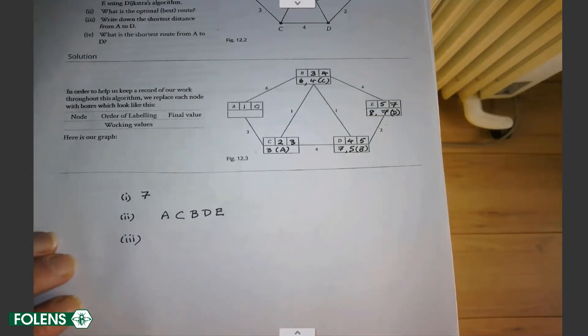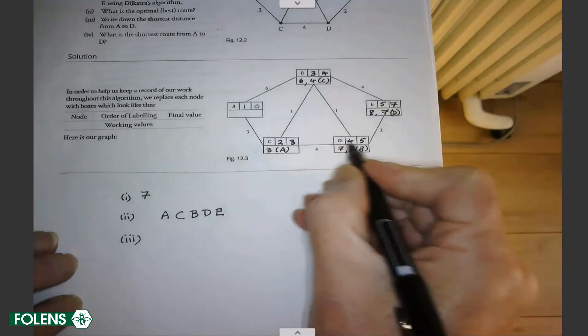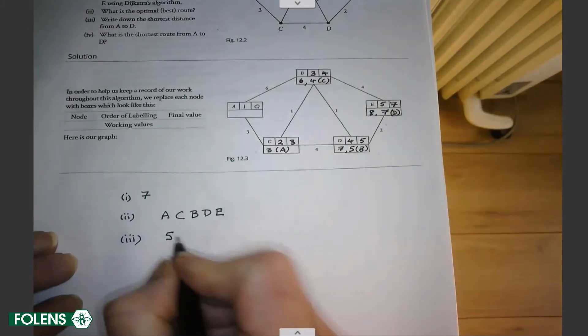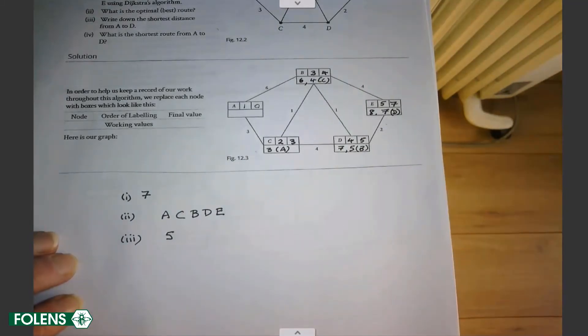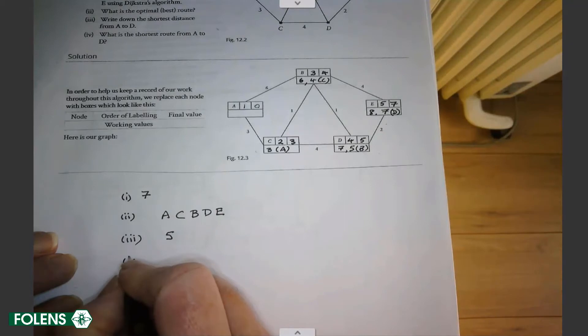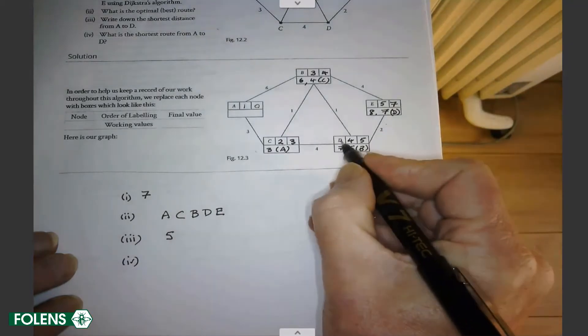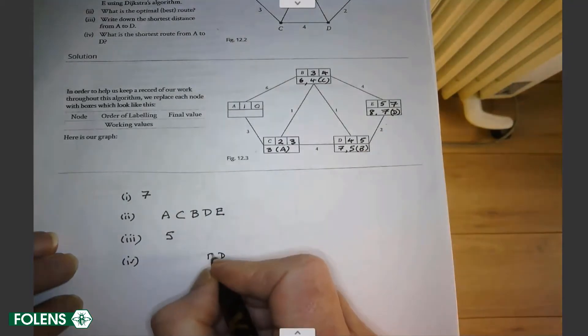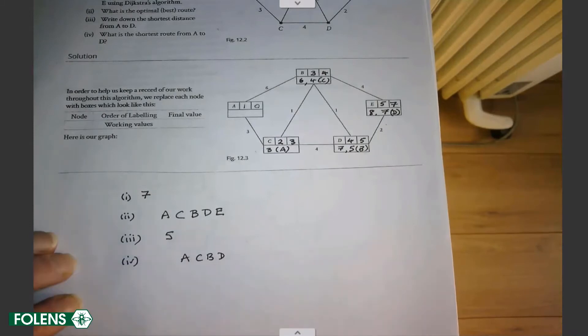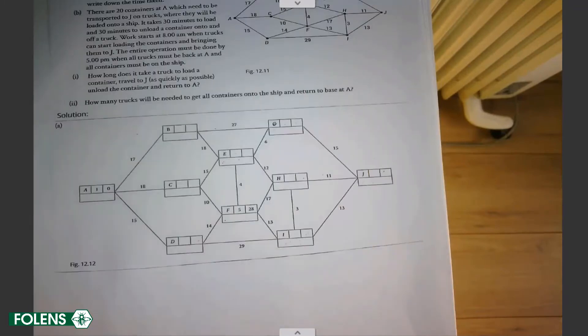Where did D come from? It came from B. So I put in B. Where did B come from? It came from C. And where did C come from? It came from A. That is the optimal route going from A to C to B to D to E. And that has a total value of seven. Write down the shortest distance from A to D. Well, if you look at D, the final value was five. And so that's the shortest distance from A to D. That's a byproduct of Dijkstra. And what route was that? Well, D came from B, which came from C, which came from A. That's it. That's a very simple and basic one.